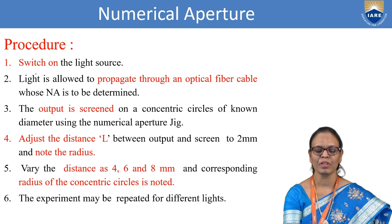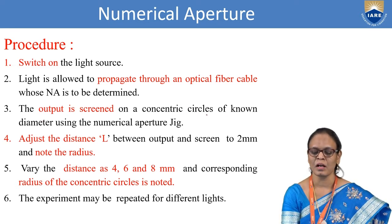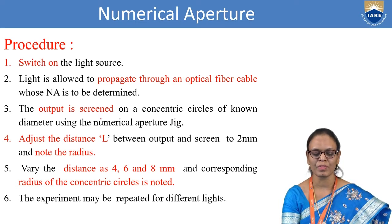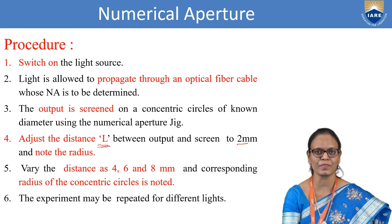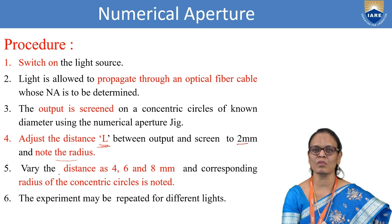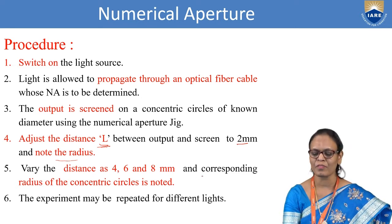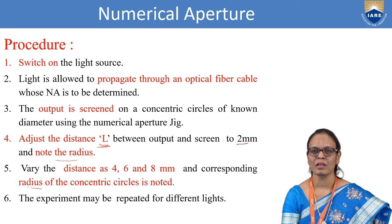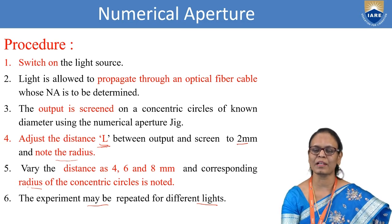We switched on the light source and allowed light to propagate through the optical fiber. The output is screened on concentric circles of known diameter on the numerical aperture jig. We first adjusted the distance L to 2 millimeters and noted the radius. Then we vary L to 4, 6, and 8 millimeters and note the corresponding radius each time. We can tabulate the readings for different values of L and R. The experiment may also be repeated for different wavelengths using a laser — a monochromatic source of single wavelength.